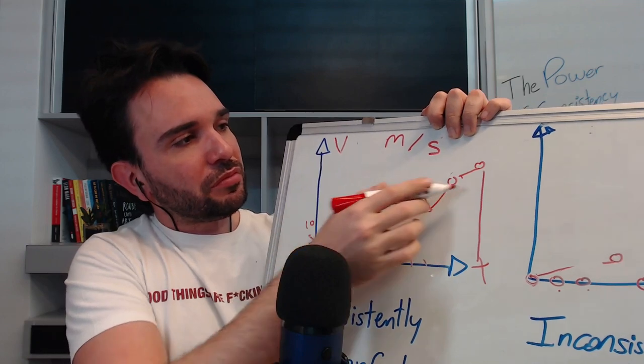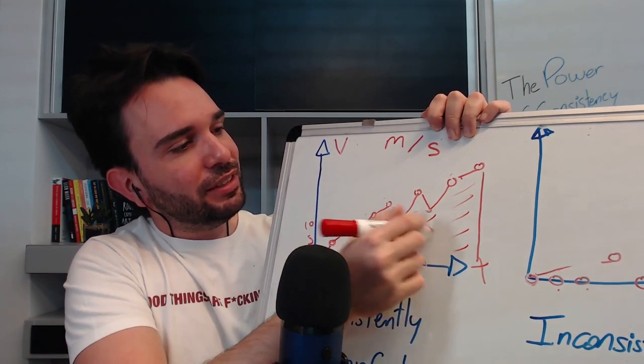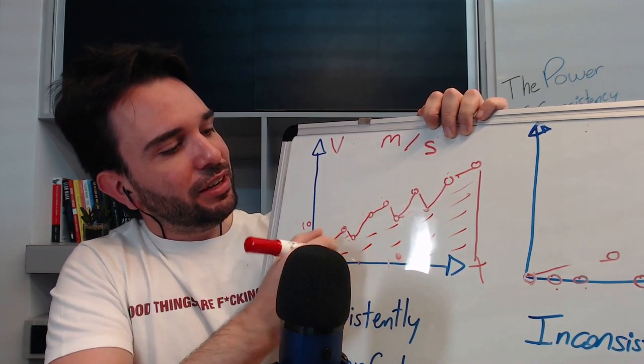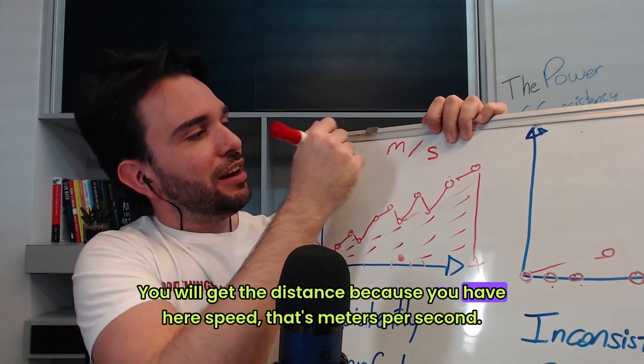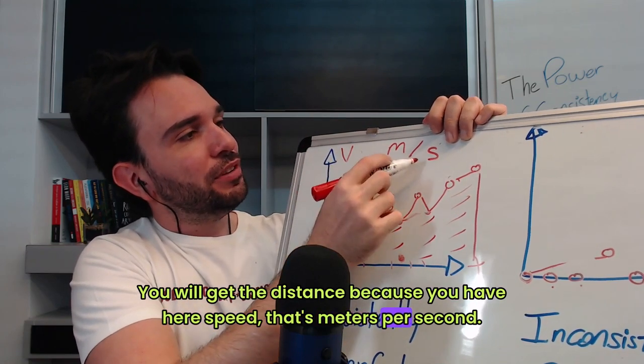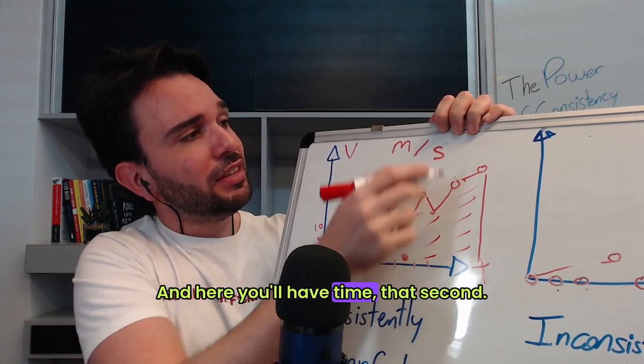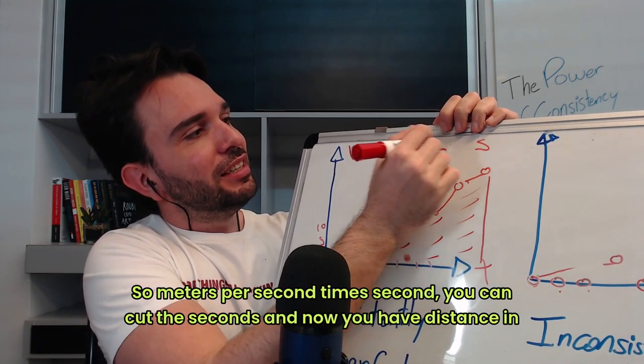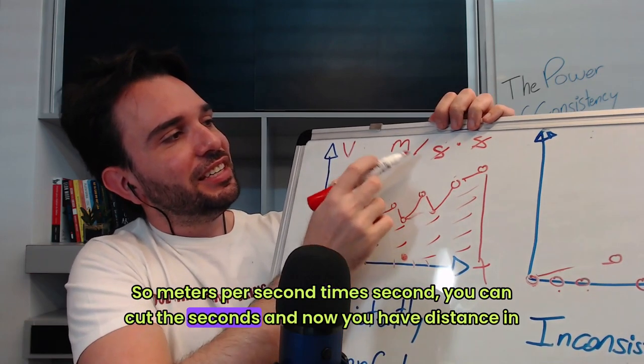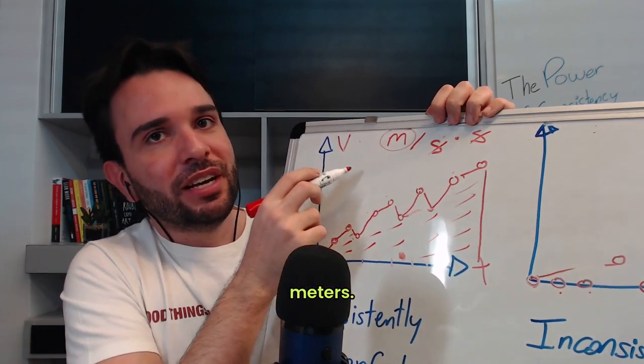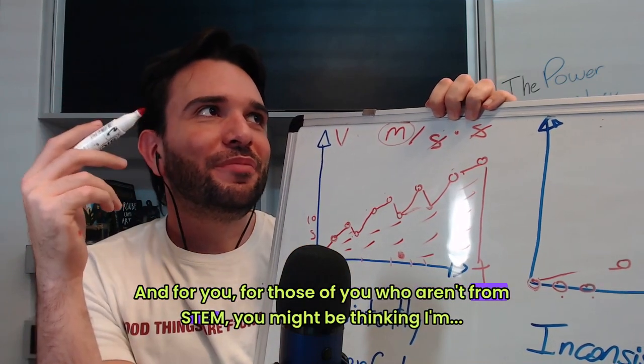But if you get the whole area of this graph, what will you get? You will get the distance. Because you have here speed that's meters per second, and here you have time that's seconds. So meters per second times second, you can cut the seconds, and now you have distance in meters.